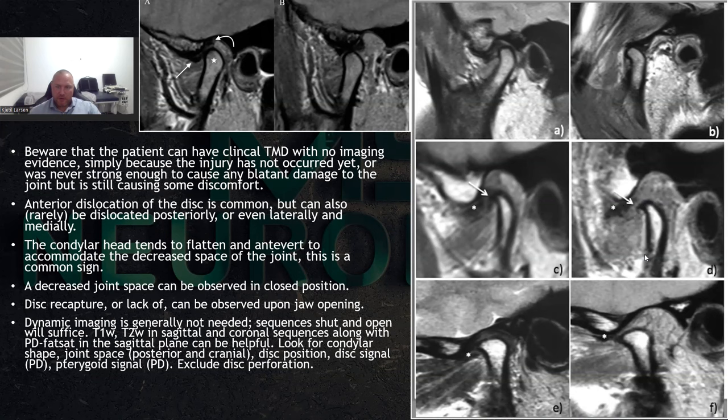In the last sequence, E and F, we can see a narrow joint space. The disc is visible by the asterisk — not so easy to see, but it's there. When they open the mouth, the condyle does not surpass the articular process; it gets stuck, and the disc is lodged in front of it.